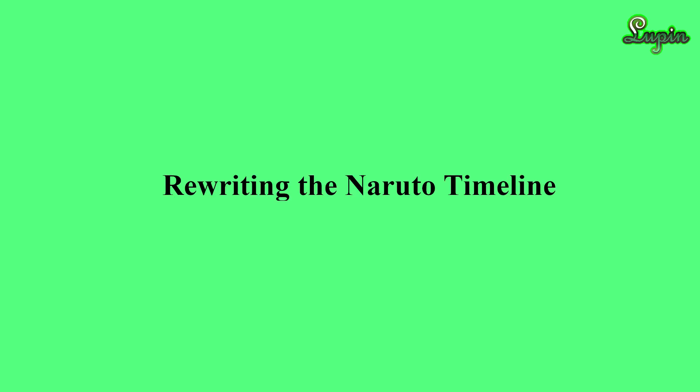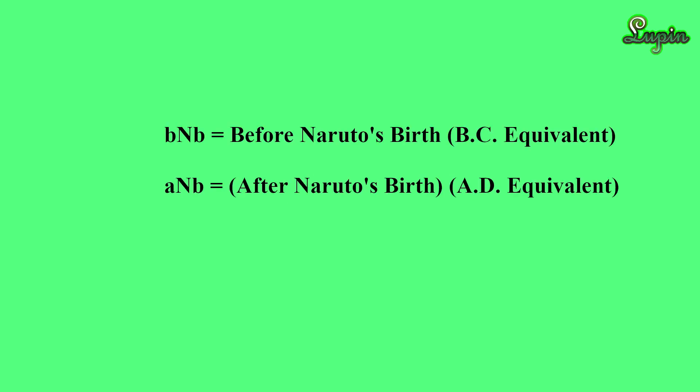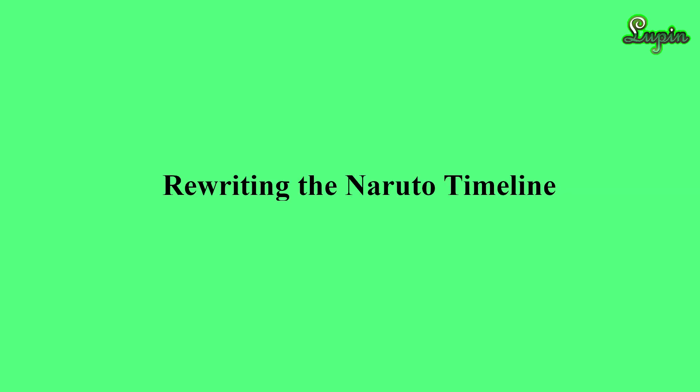Let me discuss the year system I'll be using while offering some general advice on world building. In Sealantau's timeline, they use the system of BNB and ANB — that's Before Naruto's Birth and After Naruto's Birth — much like how the real world uses BC and AD. This is not the best system in the world to use, objectively speaking, since most of the series events happened before he was born, creating a timeline that mostly uses negative numbers, which can be a bit trickier to work with and makes calculations less intuitive and harder to do in your head.